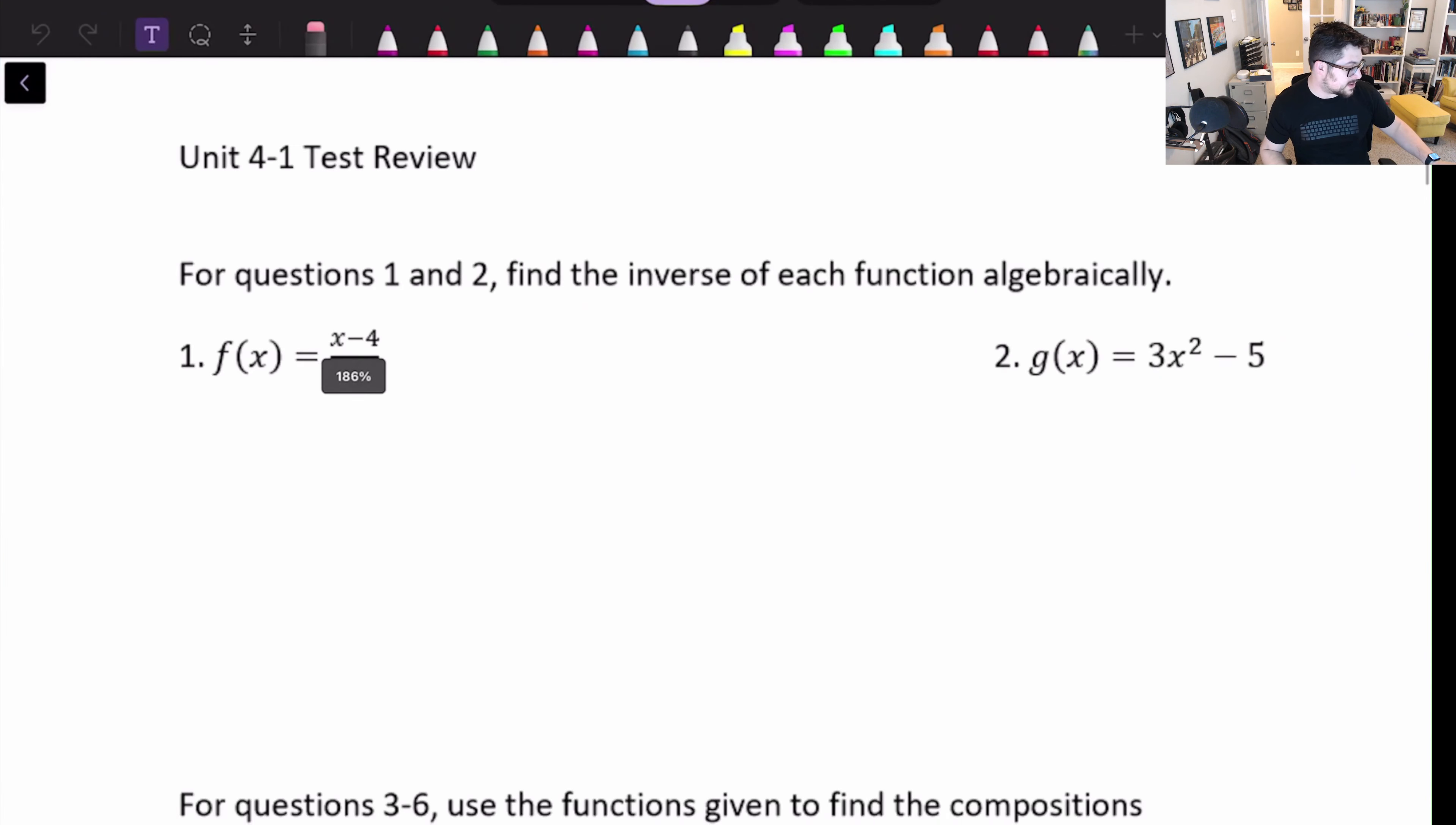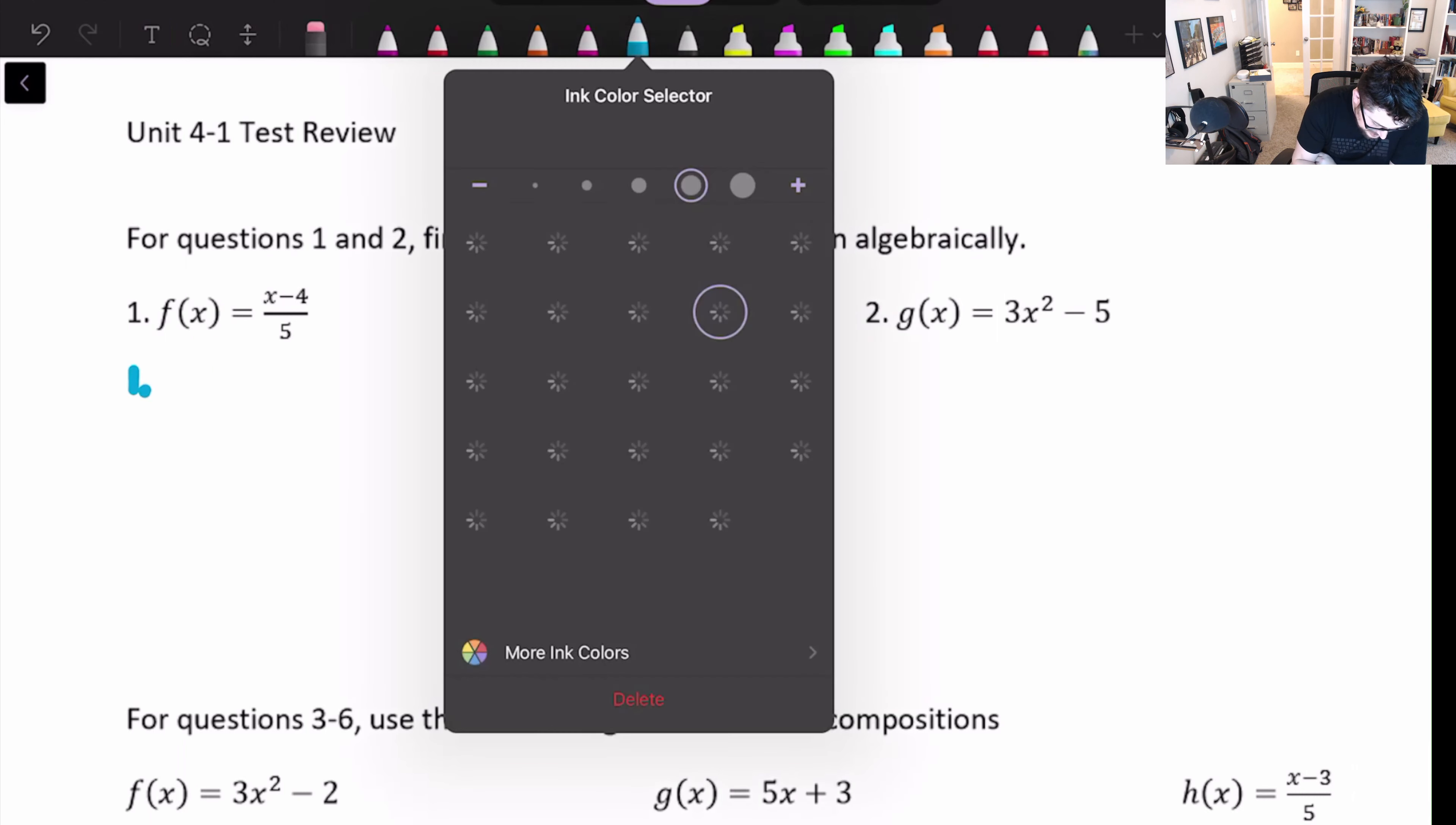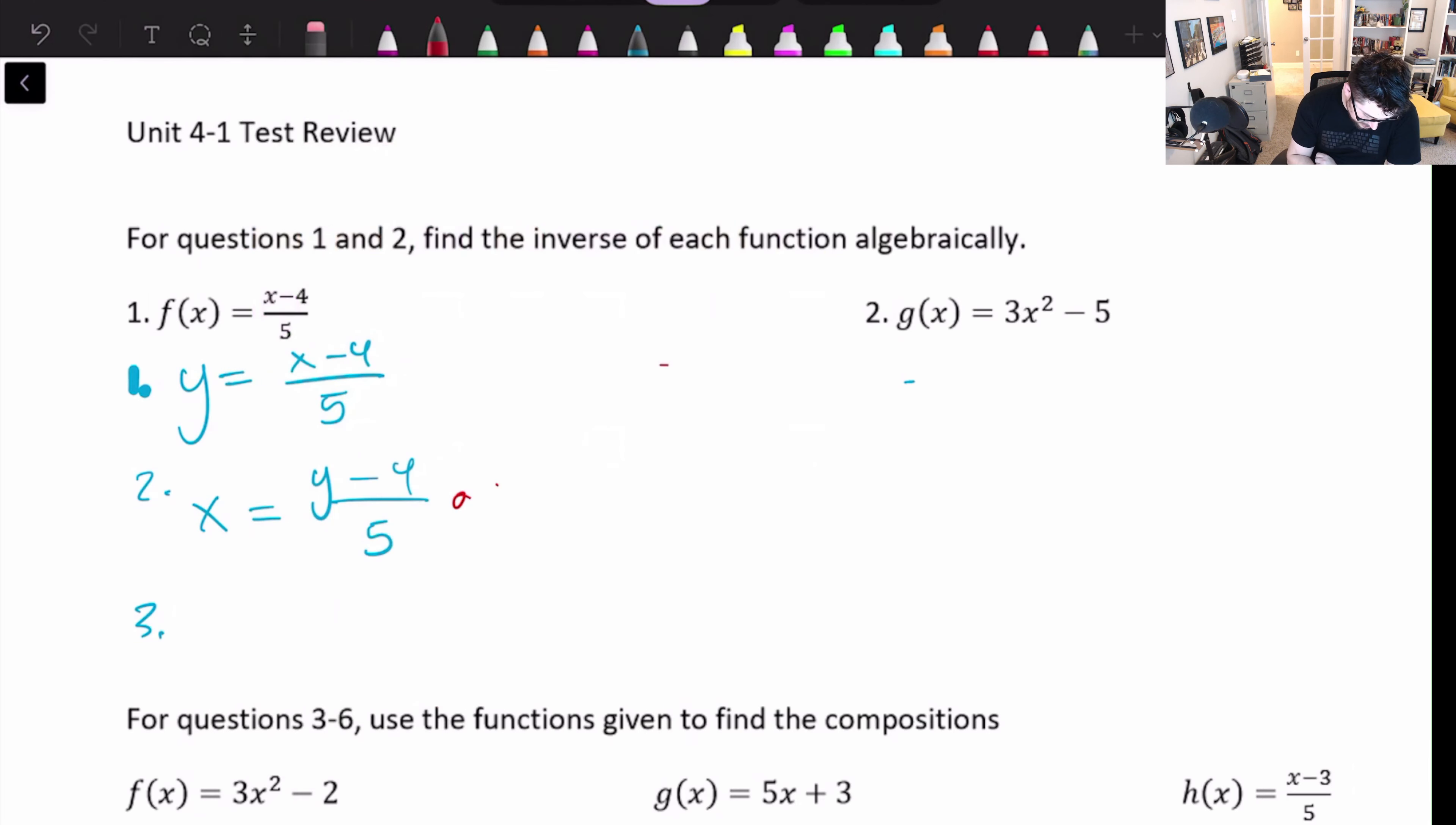So question 1 and 2 are just asking you to find the inverse of each function. And so what they're asking you to do is go through the steps. We talked about steps being step 1 is rewrite. So something kind of like this. Step 2 is switch x and y. So something where x equals y minus 4 over 5. And step 3 is solve for y. Now in this case, the side with the y is being divided by 5. So what we want to do is we want to multiply because that's the opposite. So if I multiply both sides by 5,